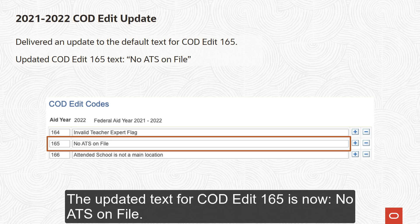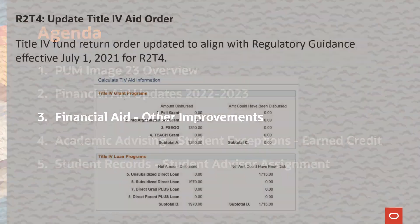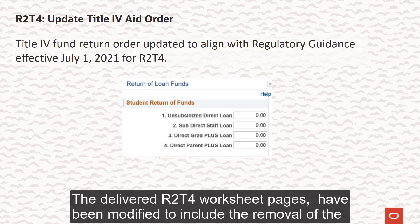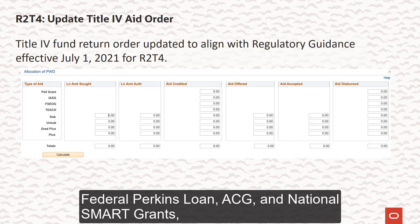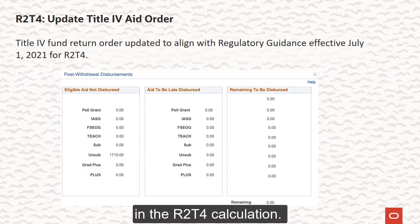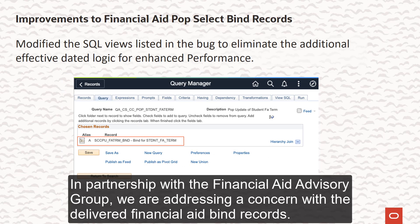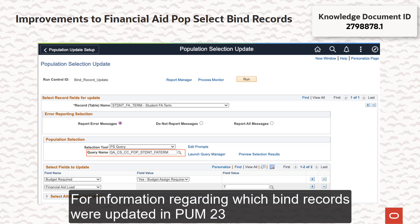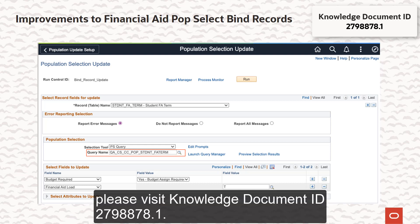We delivered an update to the default text for COD Edit 165 in View COD Edit Codes to align with the July 2021 COD Technical Reference Update for the 2021-2022 award processing year. The updated text for COD Edit 165 is now "No ATS on file." PUM Image 23 also includes an update to align with the revised fund return order for Return of Title IV aid effective July 1, 2021. The delivered R2T4 worksheet pages have been modified to include the removal of the Federal Perkins Loan, ACG and National SMART grants, and the revised placement of the Iraq and Afghanistan Service Grant in the R2T4 calculation. In partnership with the Financial Aid Advisory Group, we have updated the SQL views in the bind records to eliminate additional effective dated logic for enhanced performance. For information on which bind records were updated in PUM 23 and records targeted for future releases, please visit Knowledge Document ID 2798878.1.